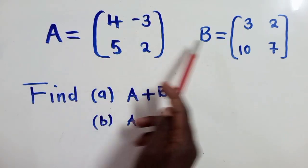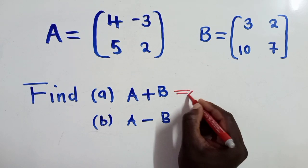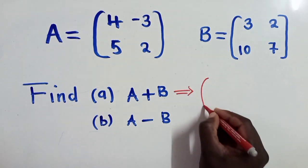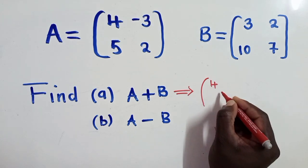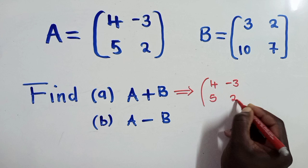Matrix A is right here and B is here. So to answer this right here, we have to get our A. What is our A? Our A is a 4 there, negative 3, 5 and a 2.